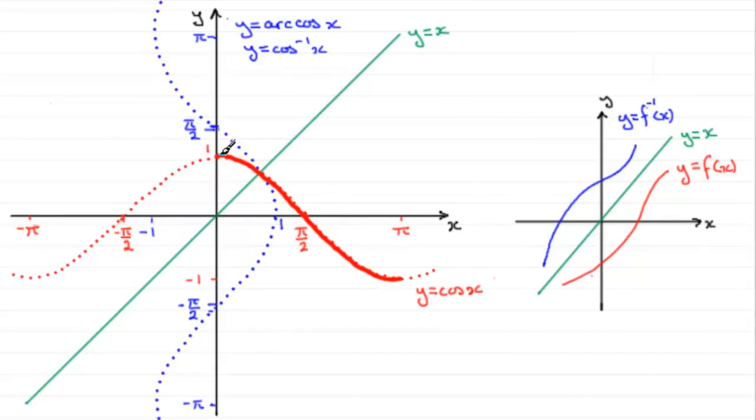Now, if I take this part of the graph and reflect this in the line y equals x, I get this particular one.